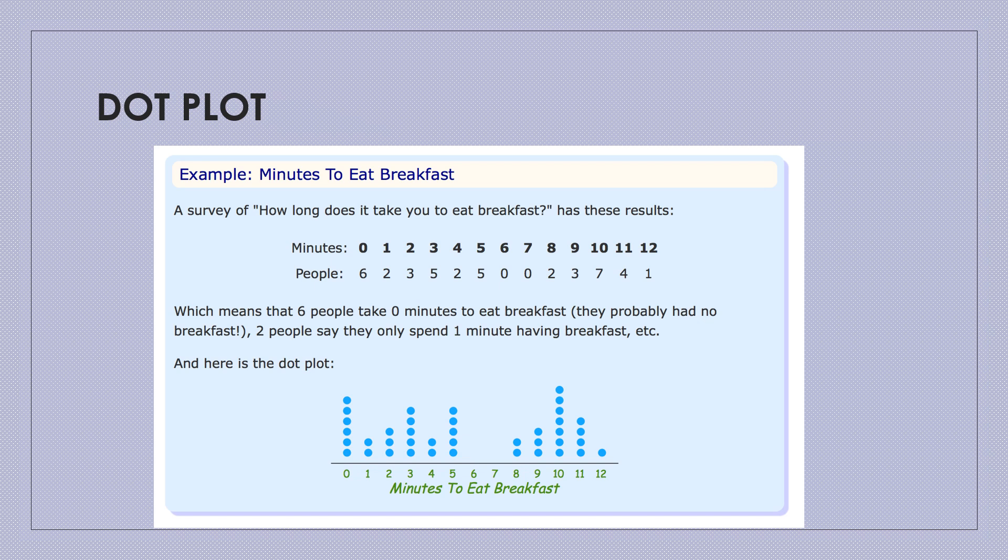Plot those points on a horizontal line: 0, 1, 2, 3, etc., up to 12. And above 0, we have got 6. The frequency is 6. There are 6 people who have said that they take 0 minutes to eat breakfast. So it means maybe they do not have breakfast at all. So I can have the dots stacked one above the other, six dots one above the other. For 1, I have two dots one above the other. Like that I can complete, and this is a dot plot.